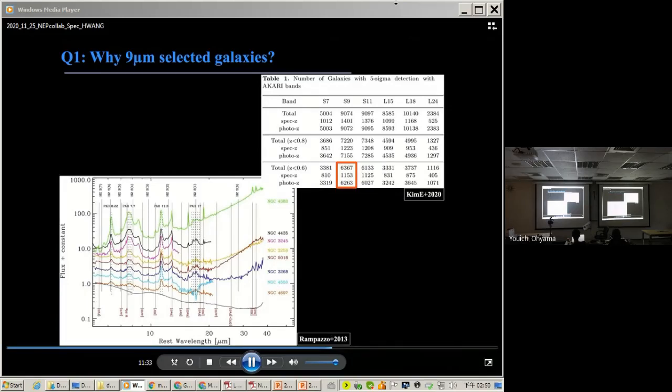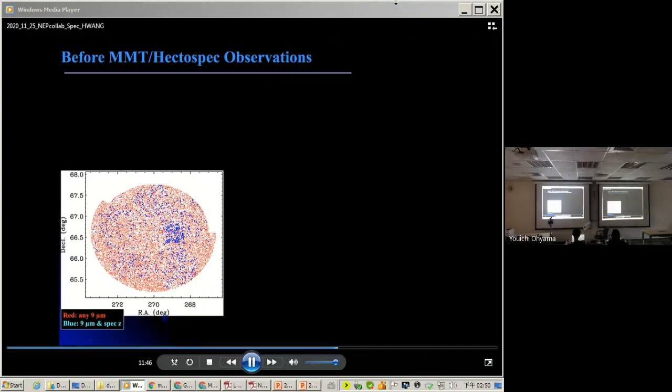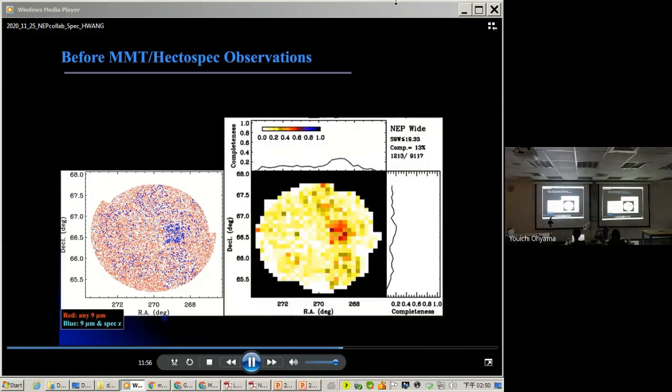As you know, the PAH emissions are useful for tracing star formation. In 9-micron, actually, 7.7 PAH emissions will be shifted to 9-micron. Meaning that you can study the star formation history of galaxies as well. So this one shows the spatial distribution of 9-micron selected galaxies, red points without redshift, blue points with redshift before observation. And this is the sample of the completeness in this RA-DEC plane. So whenever it is allowed.